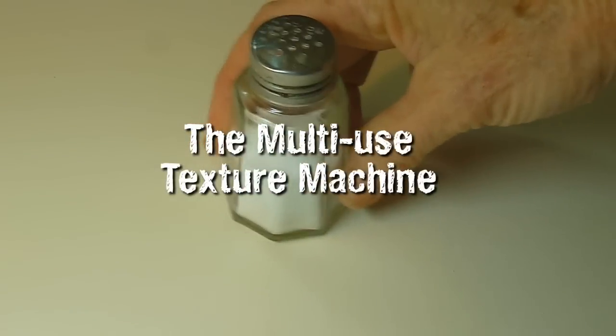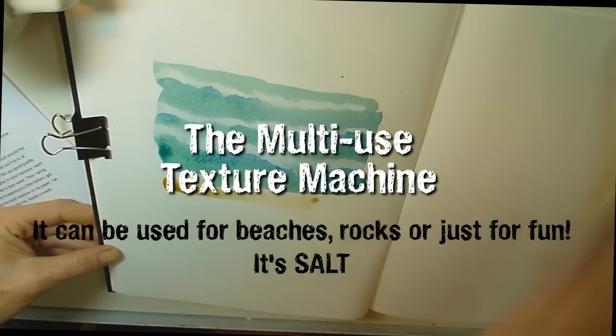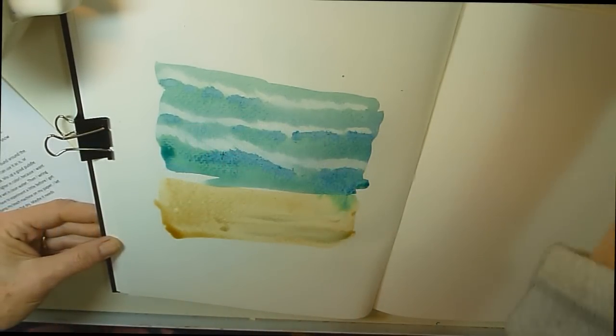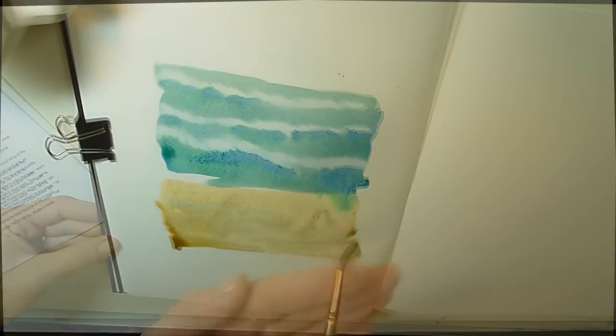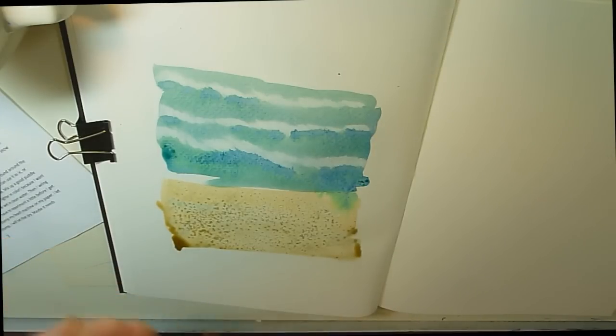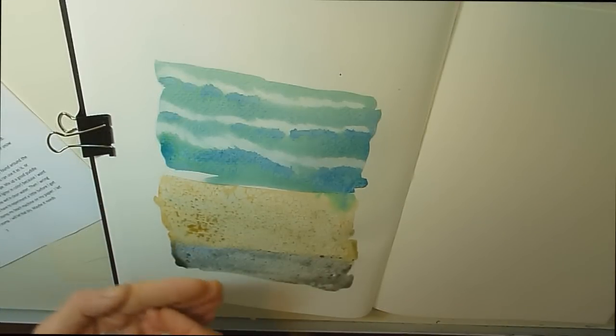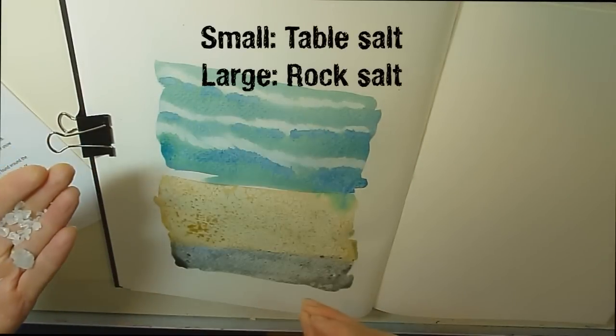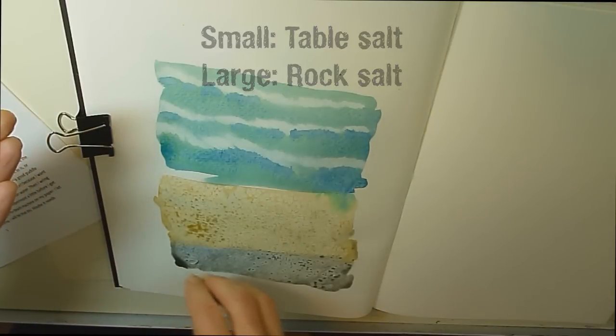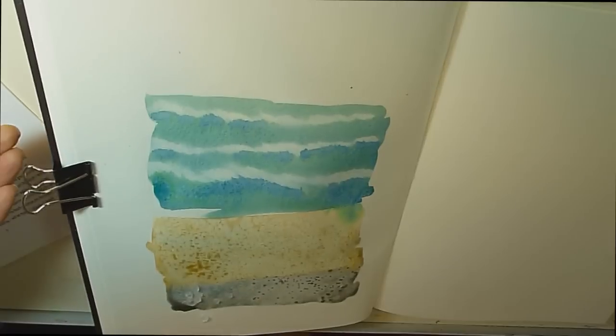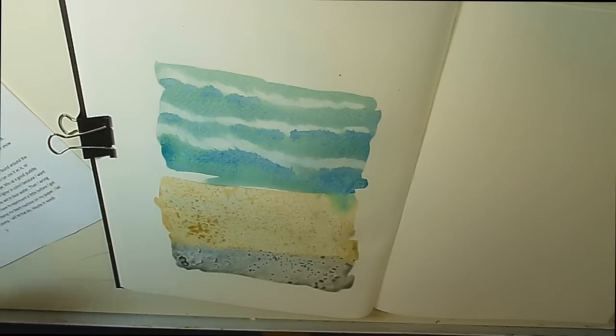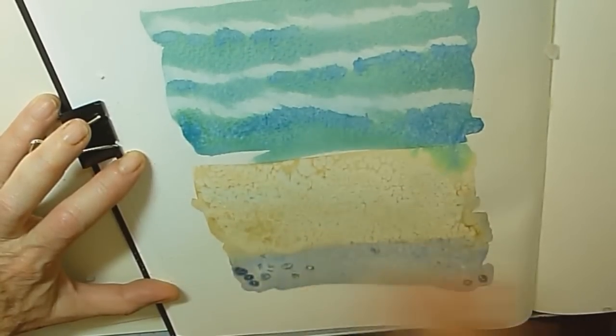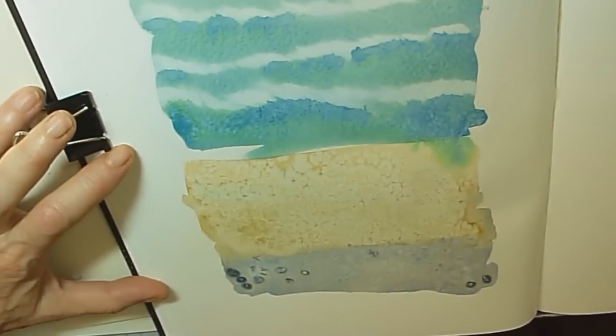This next great texture machine is readily available at local restaurants and probably in your kitchen. This is a very versatile texture machine. You can use it to make sand textures on a beach for your waves to crash on. I've mixed a couple of sand colors, and now all I do is sprinkle the texture machine on my very wet wash. The nice thing about this machine is it comes in two sizes, small and large. Your wash has to be really wet to get the right effect with the large salt. I'm moving my page a little to get that bead, that extra wet, juicy part of the wash. When the page is completely dry, brush off the salt. You can really see the difference with the rock salt.